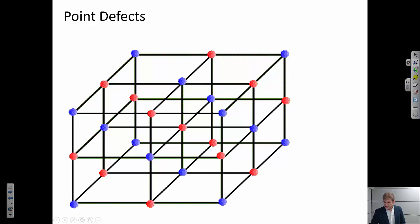So again, let's say these blue are our magnesiums. So let's say this magnesium atom leaves its normal site and comes to sit here in an interstitial site. So this is what we call a Frenkel defect.